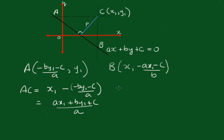Now BC, similarly, is equal to y1 minus ax1 minus c, this one here, all over b. And of course that equals ax1 plus by1 plus c all over b.